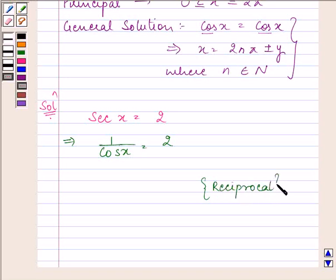Taking the reciprocal, we have cos x as 1 by 2.